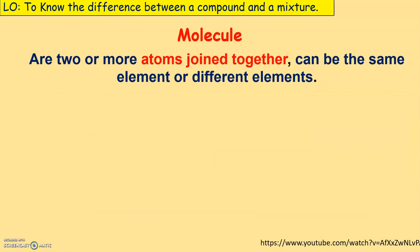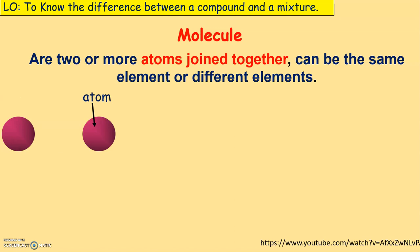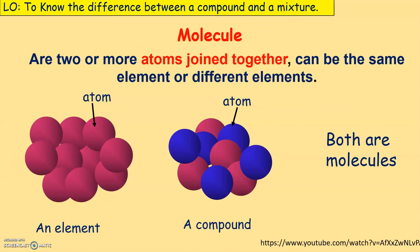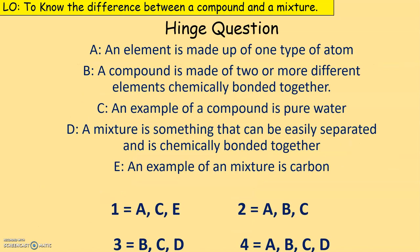Molecules are two or more atoms joined together and can be the same element or different elements. For example, an element can also be a molecule — lots of the same atom joined together. A compound is also a molecule — two different types of atoms joined. They are both molecules. It's important you don't confuse them. Pause the video and try to answer the question shown.